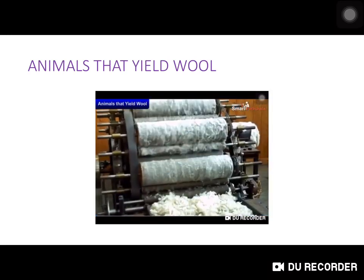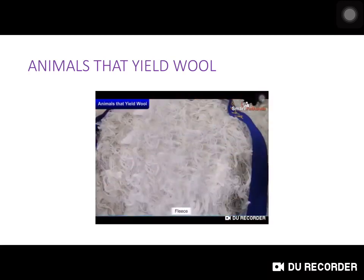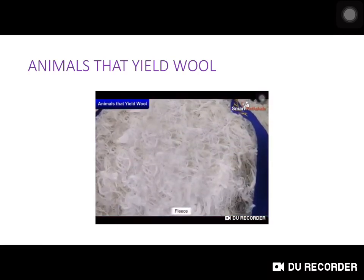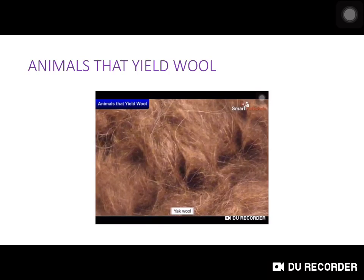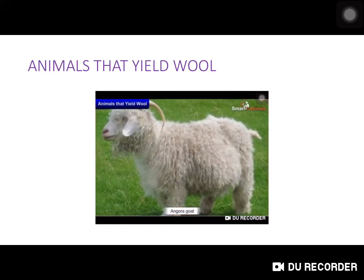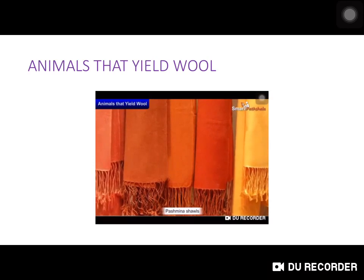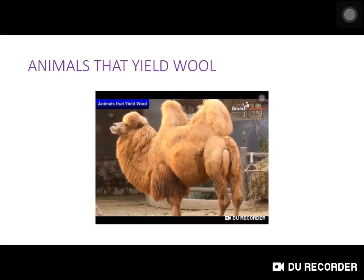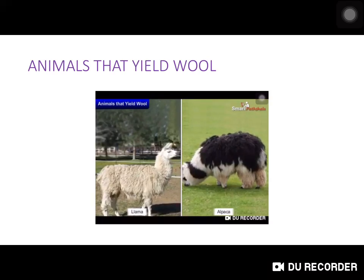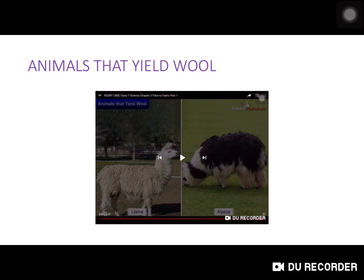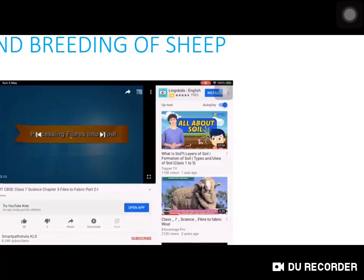The fine hair provides the fibers for making wool. The wool commonly available in the market is sheep wool. However, the fleece of sheep is not the only source — yak wool is commonly used in Tibet and Ladakh; angora wool is obtained from angora goats and woven into fine shawls called pashmina shawls; wool is also obtained from camel's fur; and in South America, wool is obtained from animals like llama and alpaca.